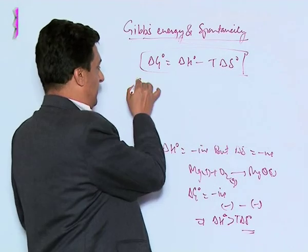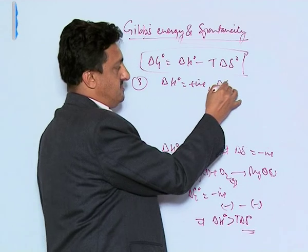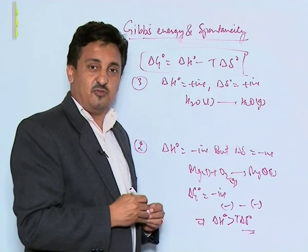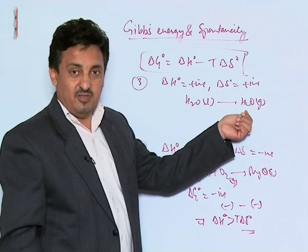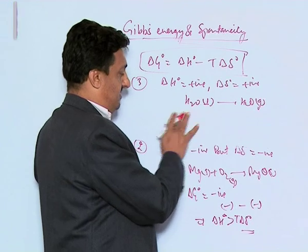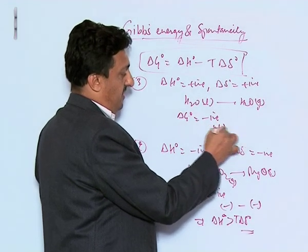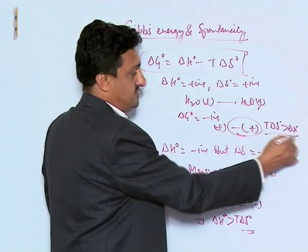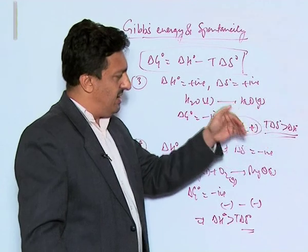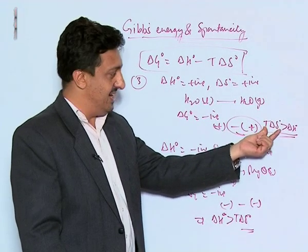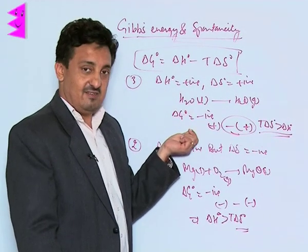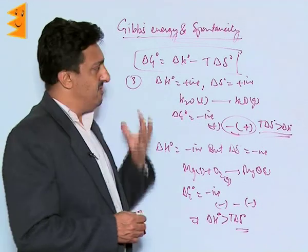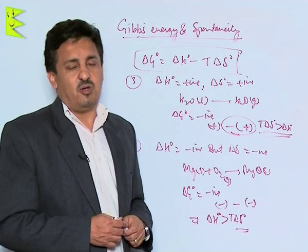The third condition is when delta H is positive but delta S is also positive. The best example is evaporation of liquid water into gas — entropy is increasing but enthalpy is positive. Delta G will be negative only if T times delta S is greater than delta H. Such processes are spontaneous only above a certain temperature, because the T delta S product then exceeds delta H, making delta G negative. These are called entropy-driven reactions.